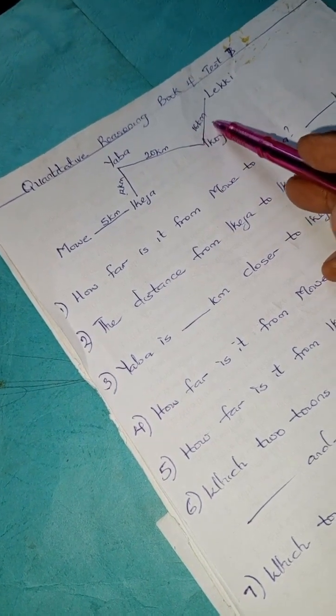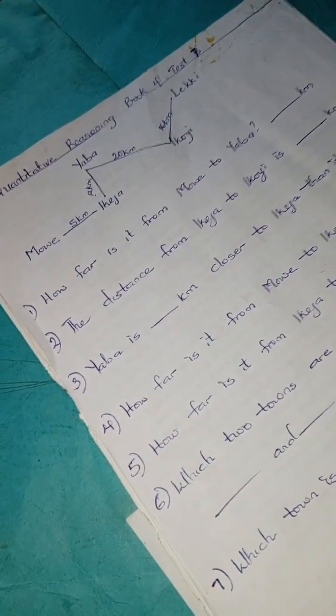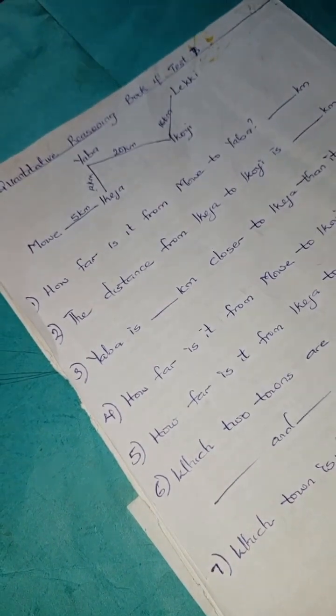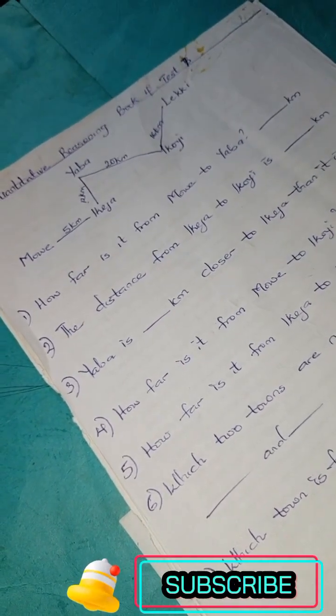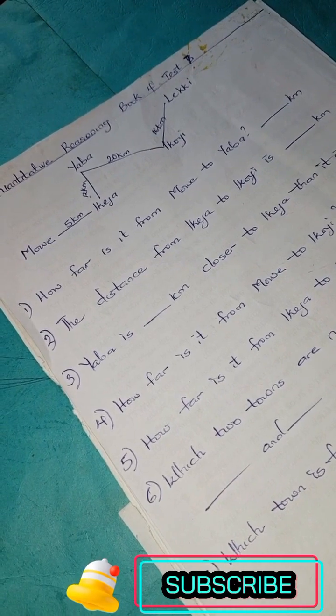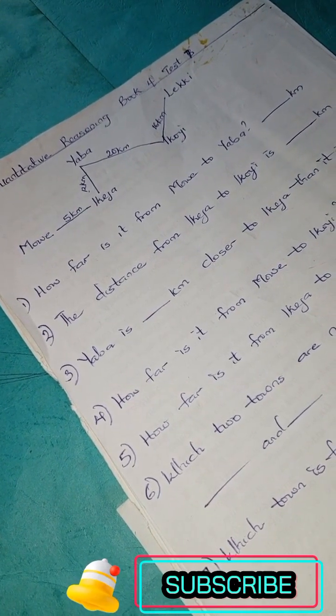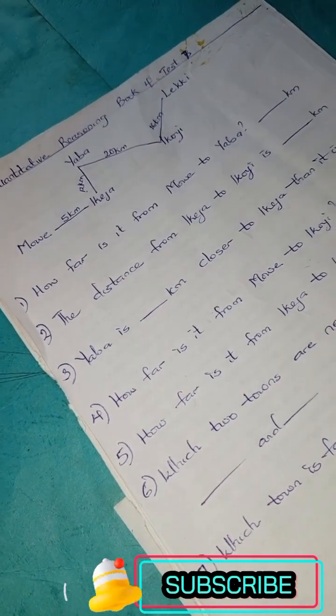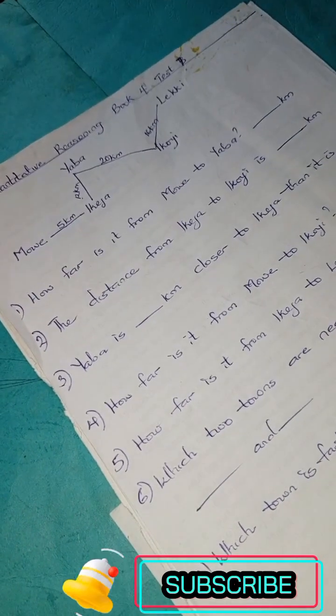Yaba to Ikoyi you have 20 kilometers, and Ikoyi to Leki we have 16 kilometers. We are meant to answer those questions. If you're yet to subscribe to this channel as a new viewer, kindly subscribe for more quantitative reasoning solutions and problems.